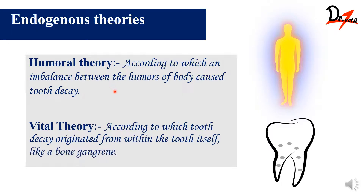Next is the vital theory, according to which tooth decay originated from within the tooth itself, like bone gangrene. This theory says that the dental decay commenced from inside the tooth itself.